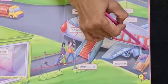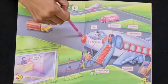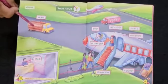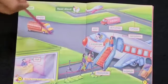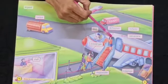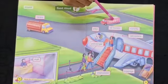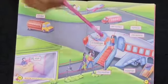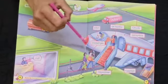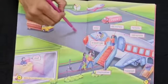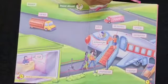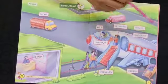The luggage is kept in the luggage cabin. When the aeroplane comes from another place, the fuel tanker comes to it and fills the fuel in the aeroplane. The food van also comes and refills the food for the new passengers. After the aeroplane is fully boarded, it starts to run on the runway and takes off. This is the runway.